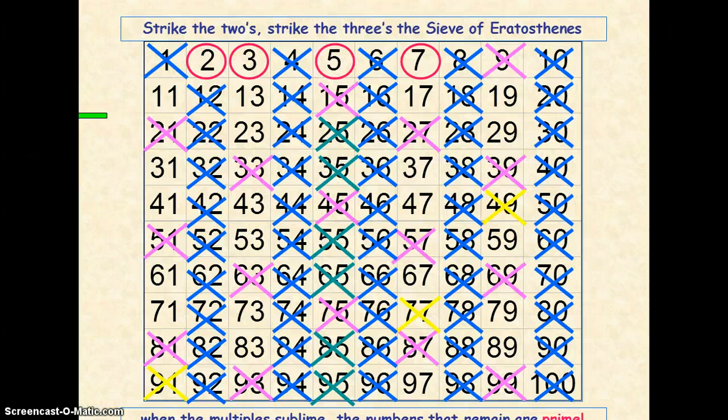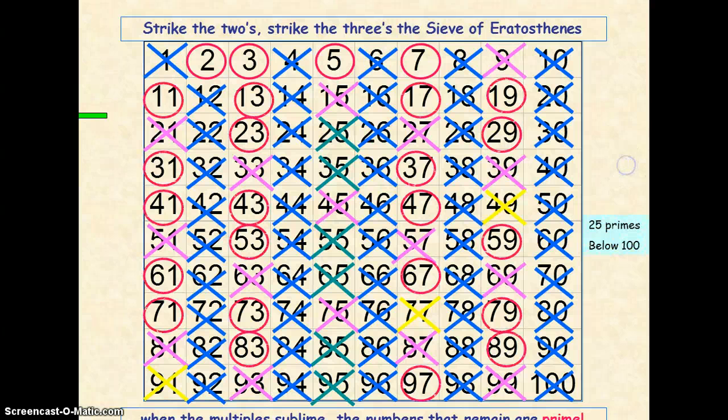Now, we've done all the numbers from 1 to 10, and all the numbers that are left now are officially prime numbers. And that's how we use the sieve method to find all the prime numbers from 1 to 100. Thank you.